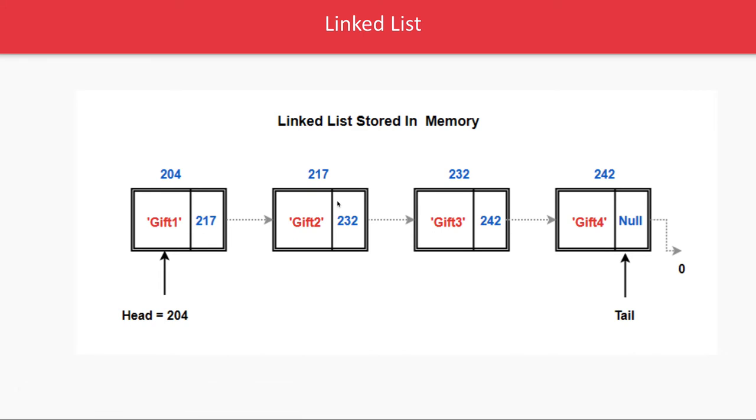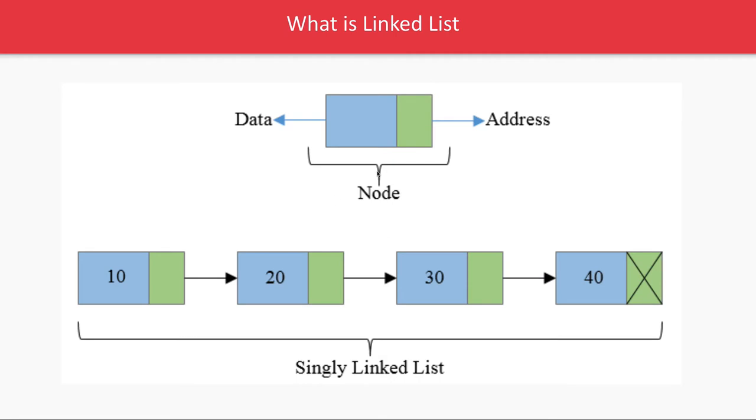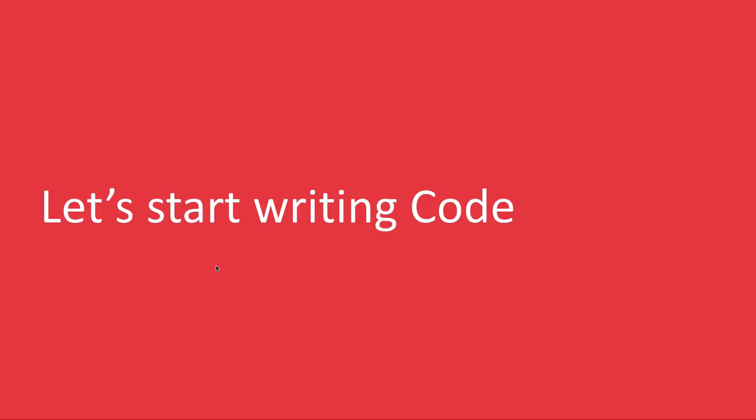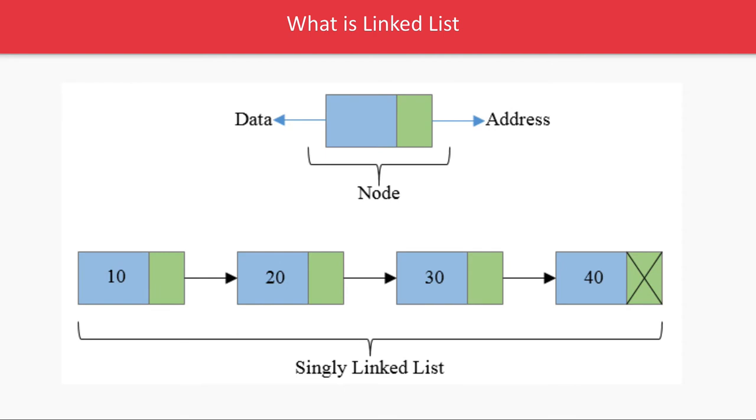It is a sequence of multiple data structures and simple data structure is as simple as having some simple data and reference. This is called as a node, individual is called as a node and there is a link, link to the next node with the memory reference. This is a single linked list. Similarly, there is a double linked list where you can traverse from left to right, right to left.